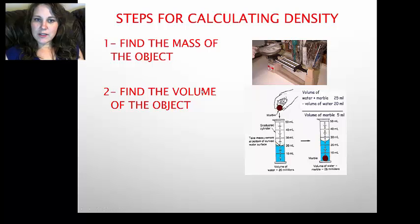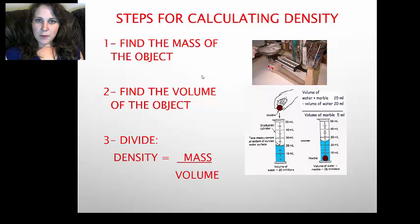We talked about three ways to calculate the volume of an object. After you have found the mass and the volume, you need to divide your mass by your volume and that will give you the density of the object.